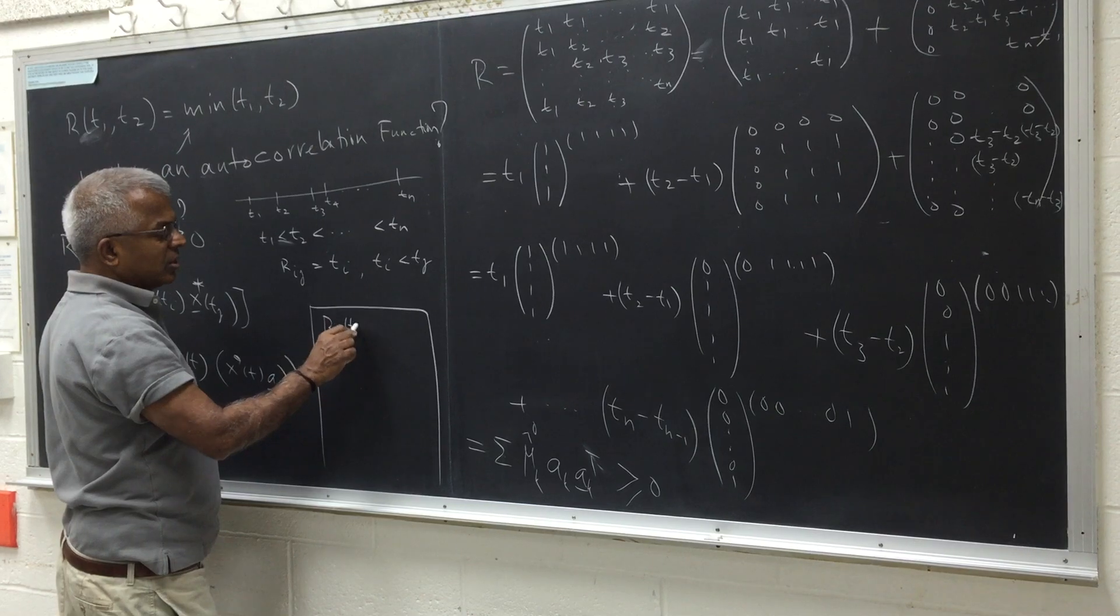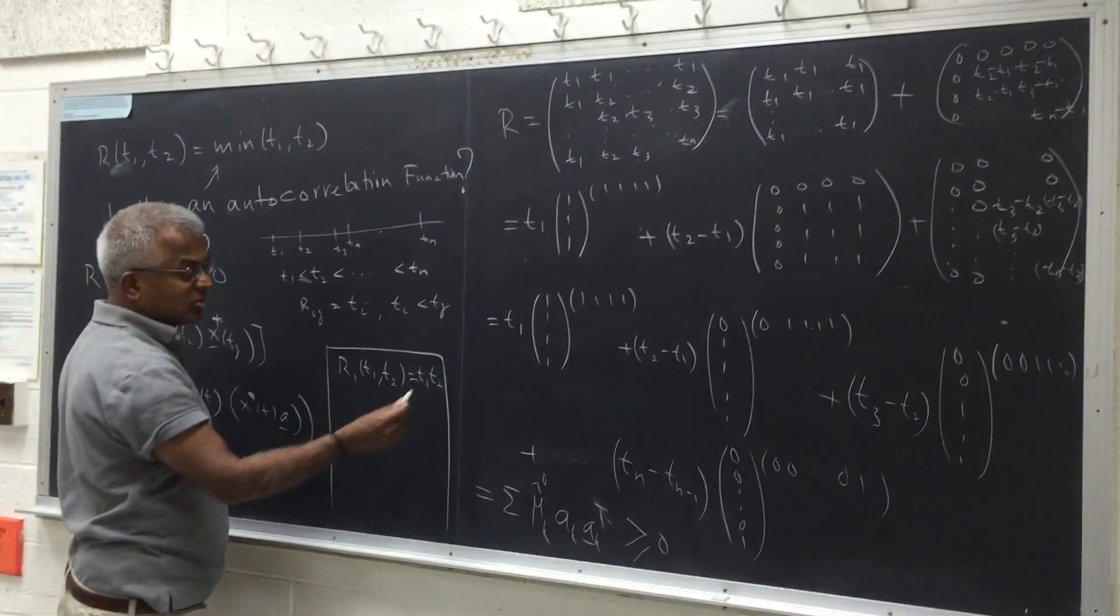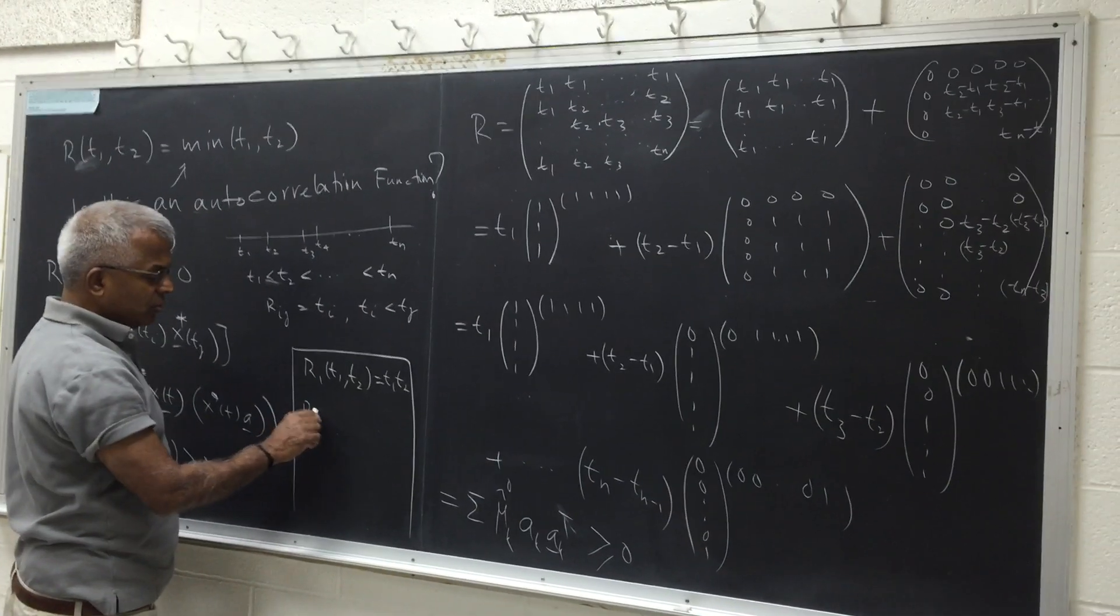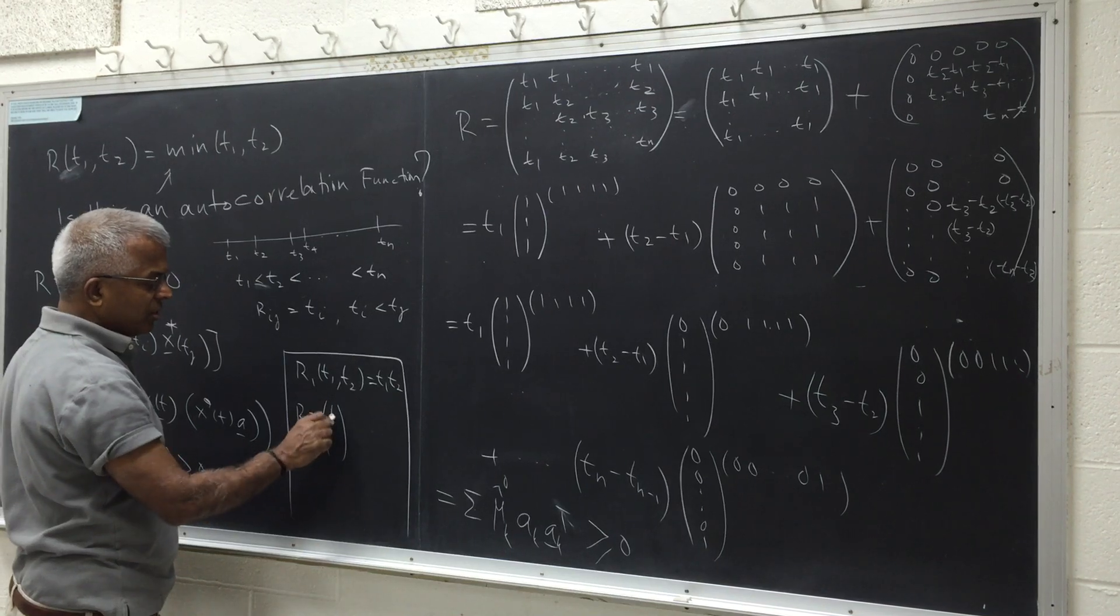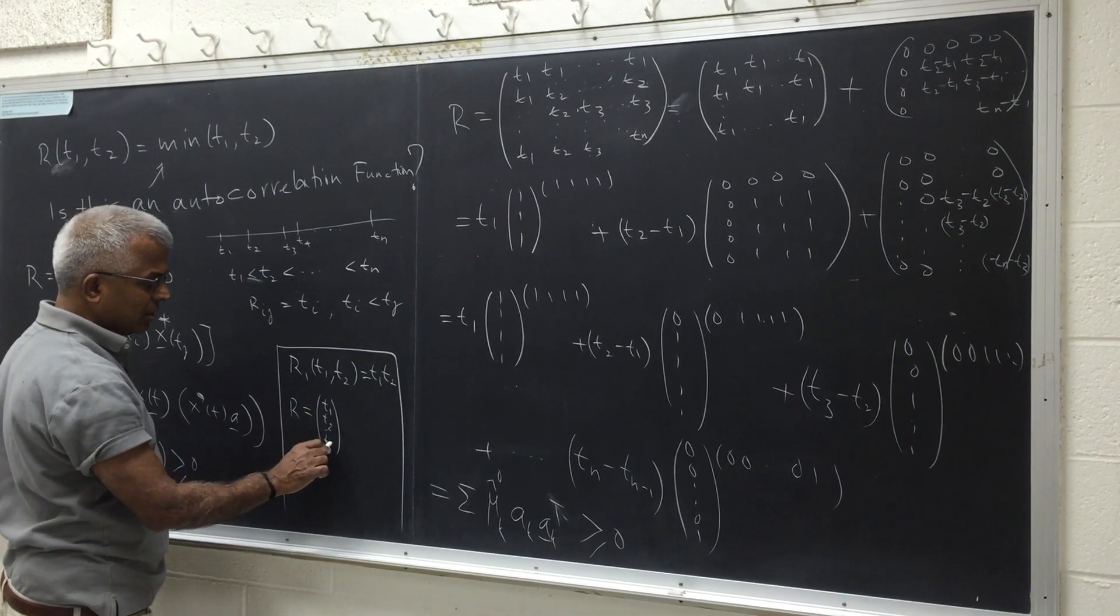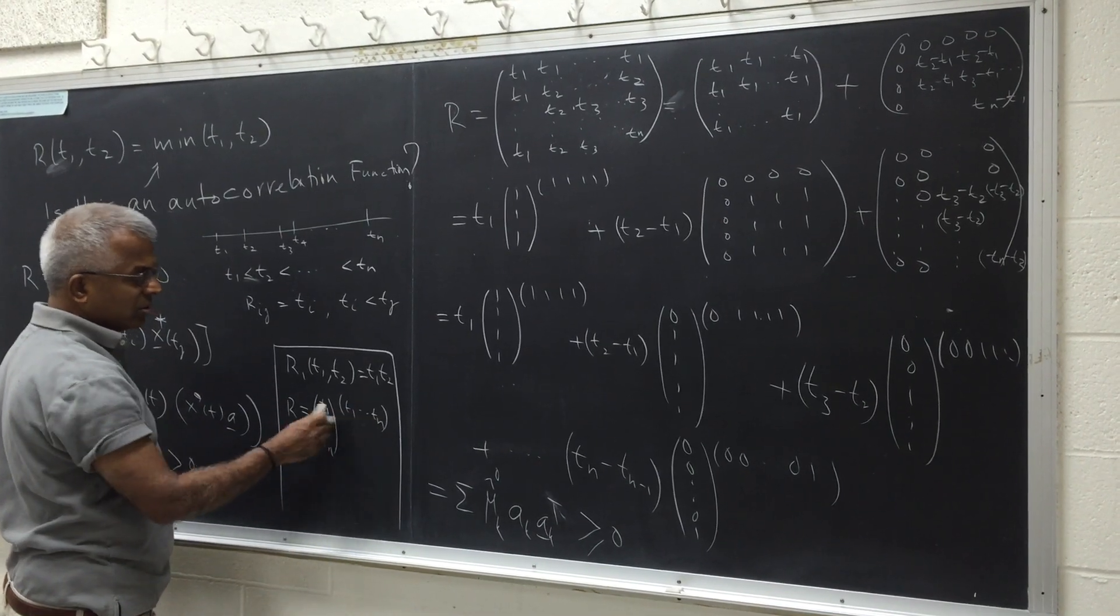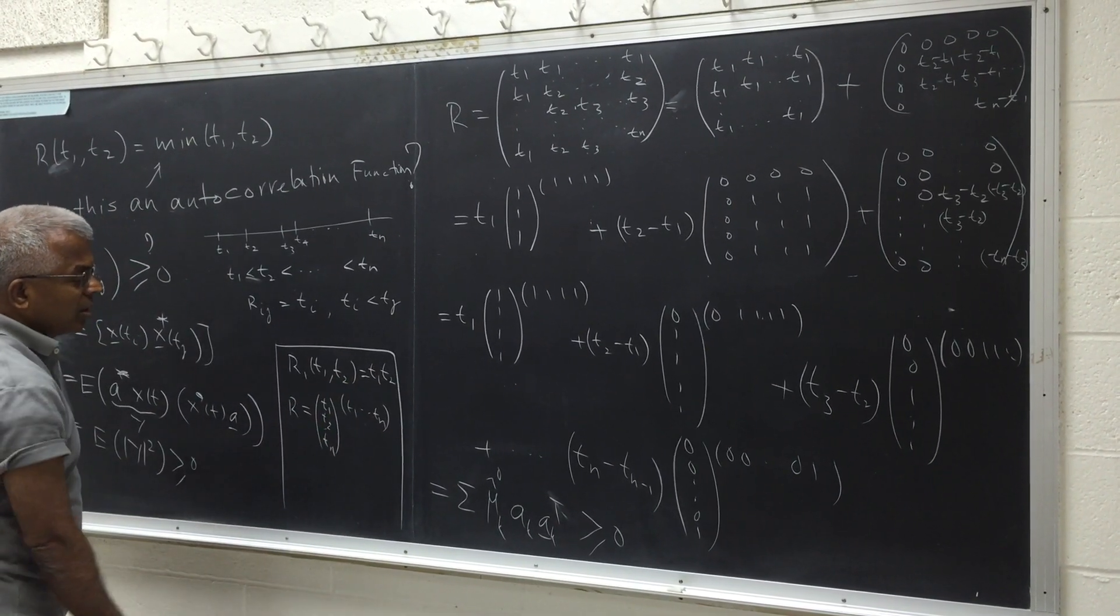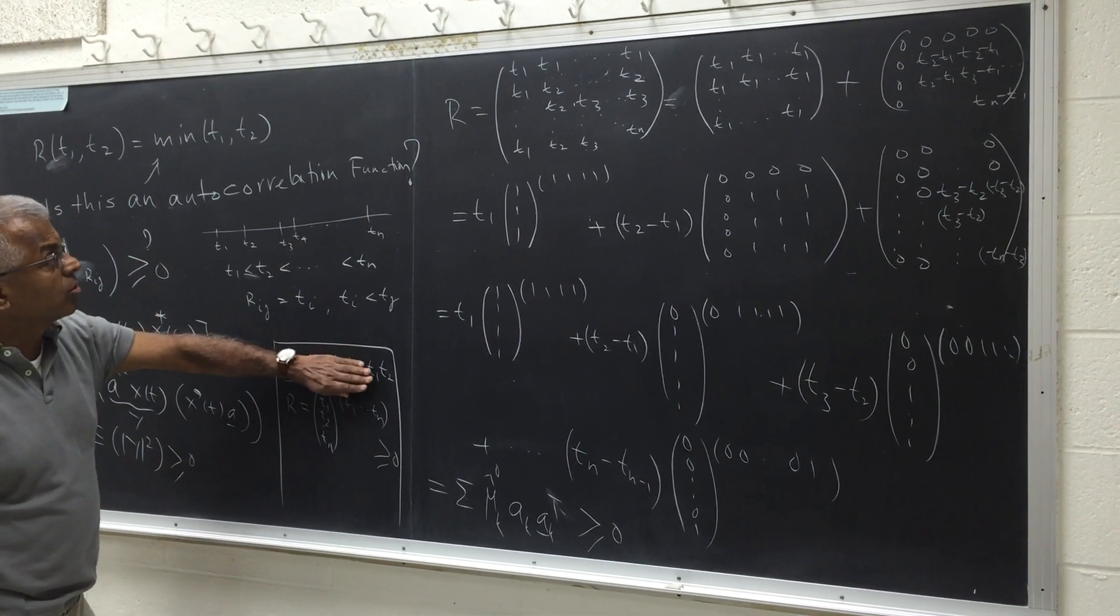So if you look at another function, r t1, t2 equal to t1, t2, of course the same argument because if you generate an r with this, so this will be t1, t2, etc. tn multiplied by t1, etc. tn. So this is actually a rank one matrix. So this is also a non-negative function. So this is an autocorrelation function.